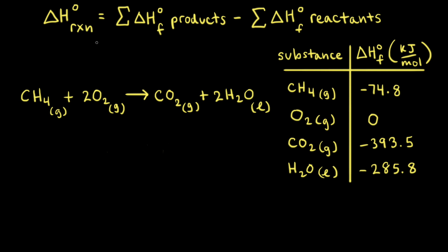We can do this using the following equation: the standard change in enthalpy for a chemical reaction is equal to the sum of the standard enthalpies of formation of the products minus the sum of the standard enthalpies of formation of the reactants.